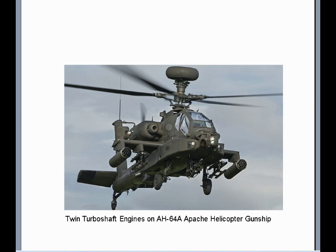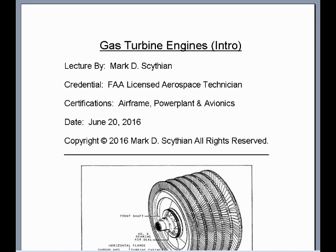One engine on the right starboard side and one on the left port side, transmitting their shaft horsepower to the main rotor. The main rotor has a drive shaft that drives the anti-torque rotor. So this is an all turboshaft powered helicopter gunship. Those are the four different types of gas turbine engine applications: the turbojet, the turbofan, turboprop, and the turboshaft. Thanks for watching this video and have a great day.